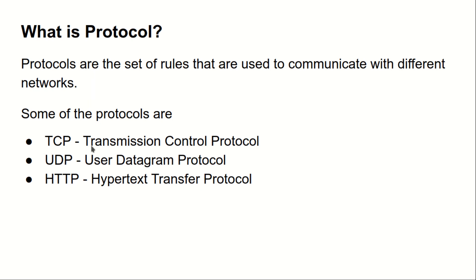The TCP protocol is the Transmission Control Protocol. This protocol is used if you want to send 100% of the information to the receiver. For example, if you have a secret document or confidential information that you want 100% delivered to the receiver, TCP will come into the picture. It will not corrupt the data and will make sure to send 100% of the data to the receiver.